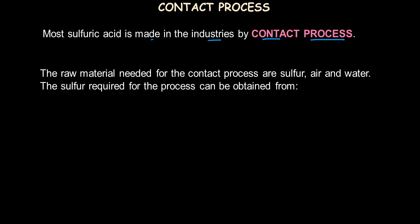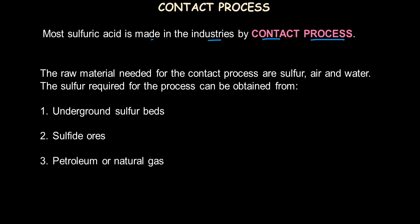The sulfur required for the contact process can be obtained from a few sources: underground sulfur beds, where sulfur is dug out; sulfide ores such as zinc sulfide or lead sulfide, from which sulfur is separated; and petroleum and natural gas, where sulfur is present naturally in petroleum fractions. It is important to separate sulfur from petroleum products because burning them can cause pollution and contribute to acid rain.